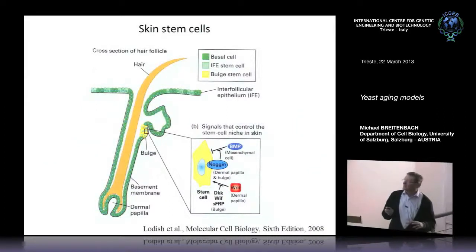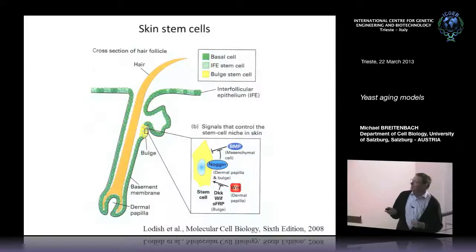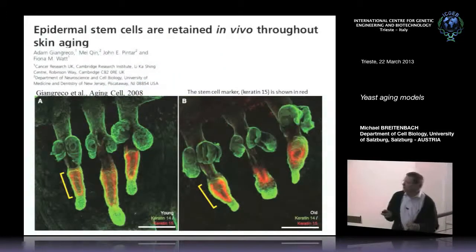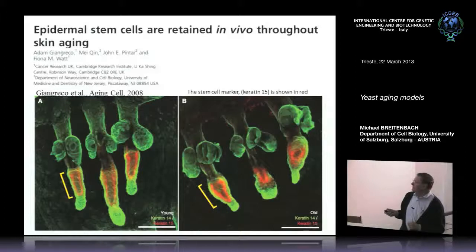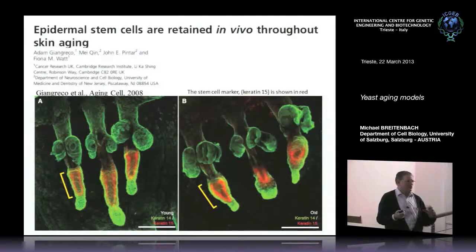In human skin there are several populations of stem cells, the most important being the bulge cells in the hair follicle. When you look at the bulge stem cells in a centenarian and in a young person, both still have the stem cell marker — an example showing that it is not the loss of stem cells that causes aging. Only the quality of the stem cells changes, but we know very little about how it changes.